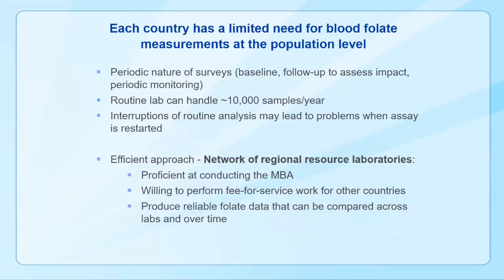National surveys to assess folate status — mainly in women of childbearing age — are periodic in nature and usually involve a few thousand samples per survey, while a routine laboratory can handle maybe up to 10,000 samples per year. It is clear that each country has a limited need for blood folate measurements at the population level. Interruptions of routine analysis may lead to problems when the assay is restarted. So it seems that an efficient approach would be to have a network of regional resource laboratories that are proficient at conducting the assay and can perform fee-for-service work for other countries to produce reliable folate data that can be compared across labs and over time.